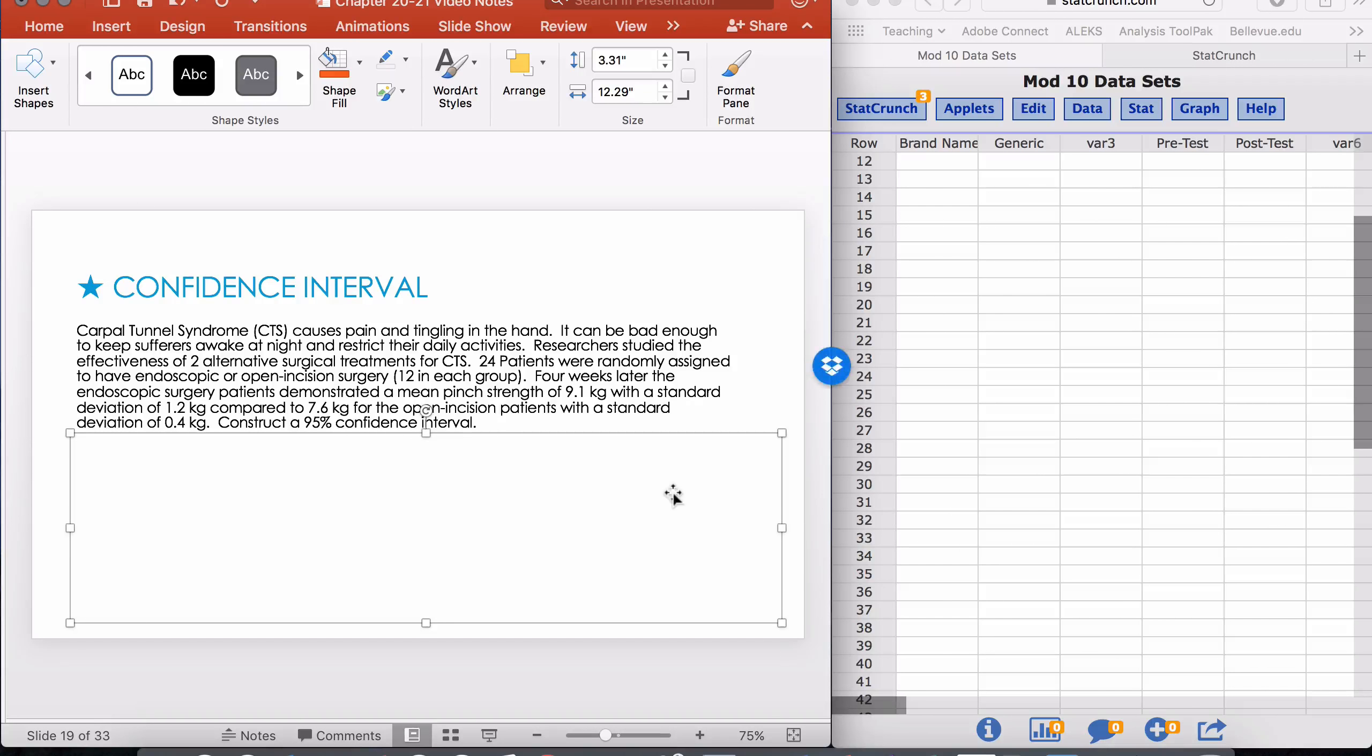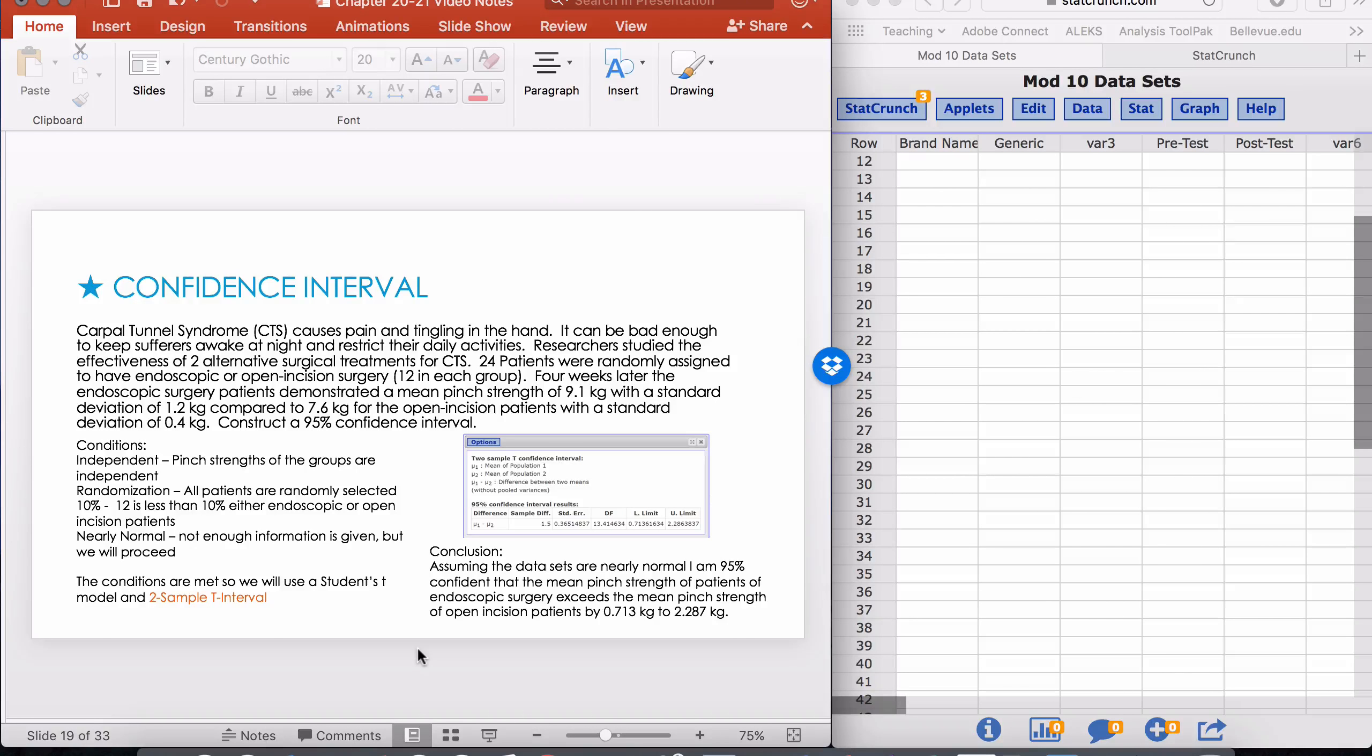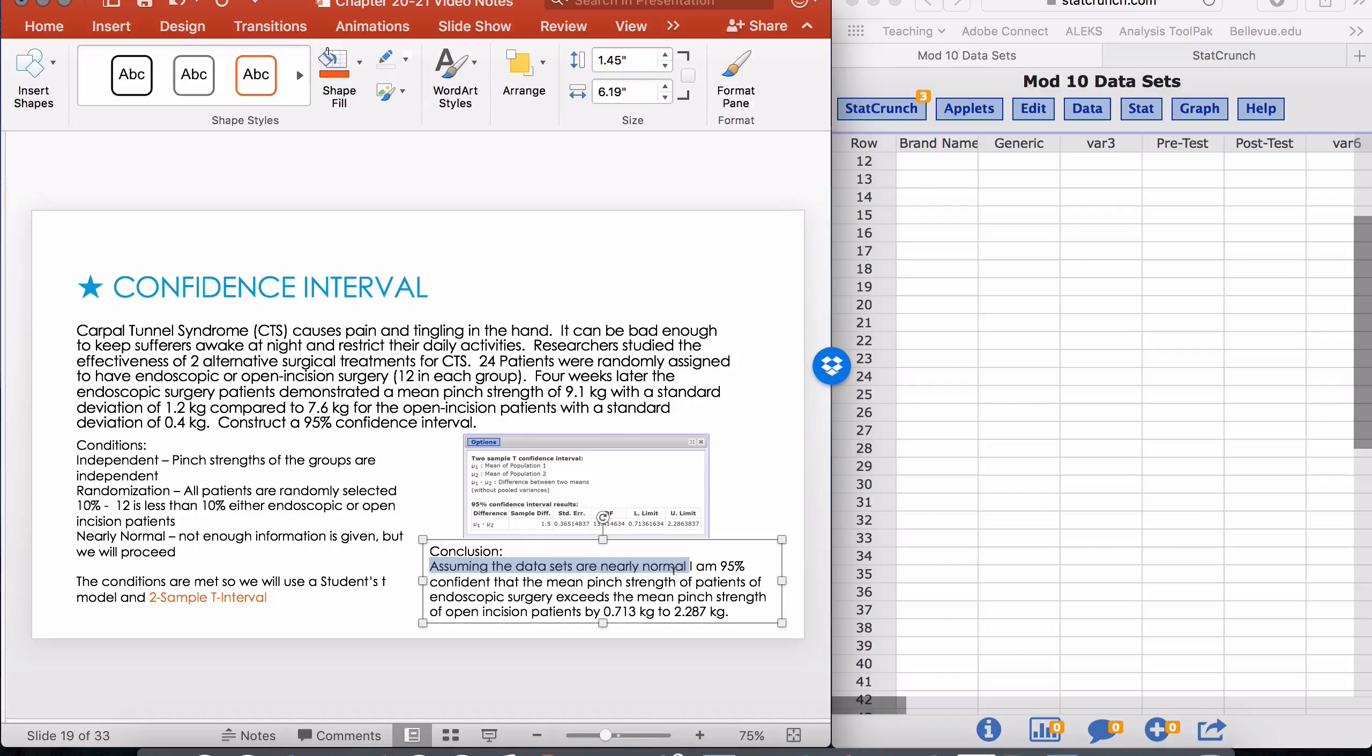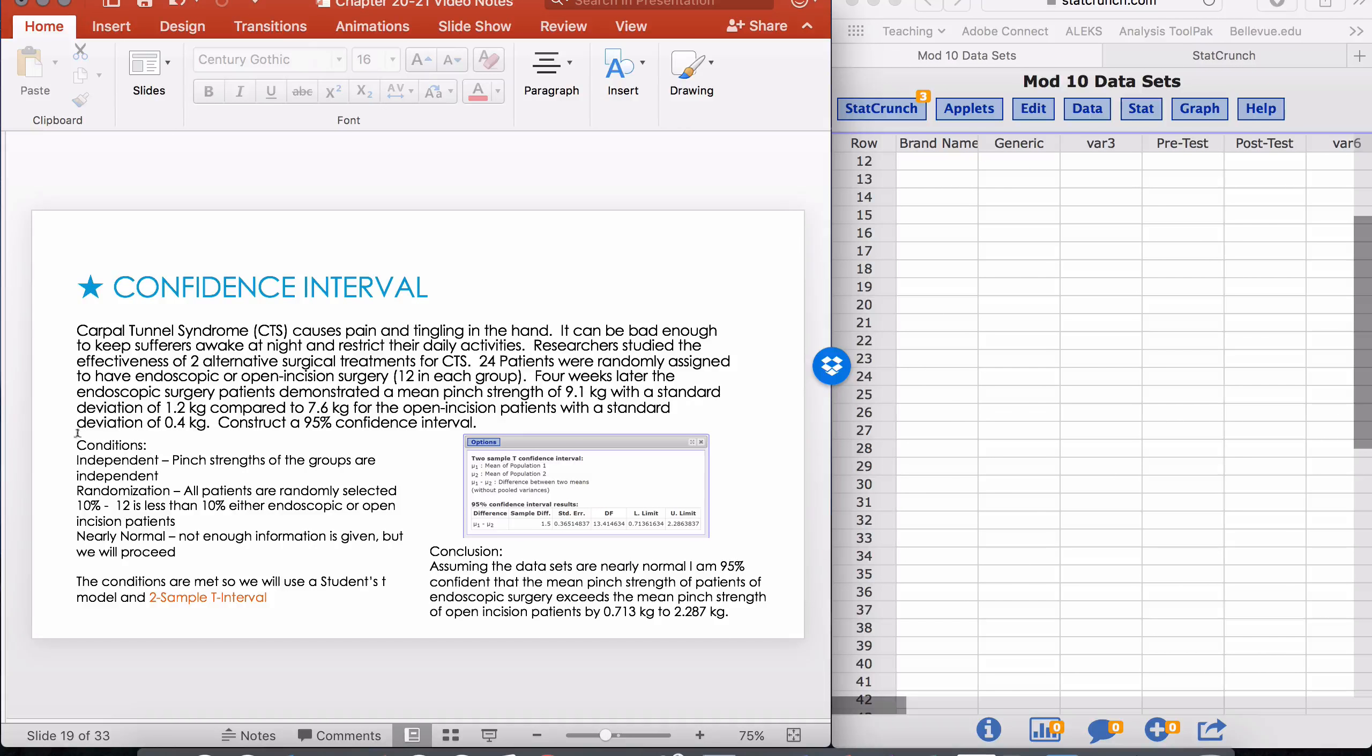Let's take a look at how we would do this one. I would check all of my conditions first. I'm not going to spend a lot of time on that, but they're there for you to read if you would like. This nearly normal condition, we're not given that information anywhere in this question, and because we don't have data, we're not able to actually make the QQ plot. I'm just going to continue anyway, and the way that I'm going to get around that is I'm going to add this sentence to my conclusion: assuming the data sets are nearly normal. I've checked conditions and said the conditions are met, so we'll use a student's T model and a 2 sample T interval.